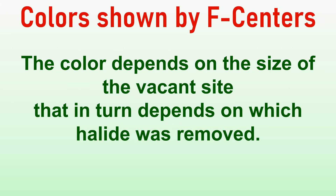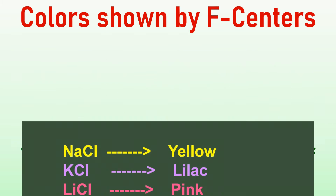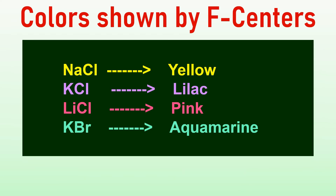The colour depends on the size of the vacant site, which in turn depends on which halide was removed. NaCl with F-centers shows yellow colour. Potassium chloride shows lilac colour, lithium chloride exhibits pink colour, and potassium bromide with F-centers is aquamarine in colour.